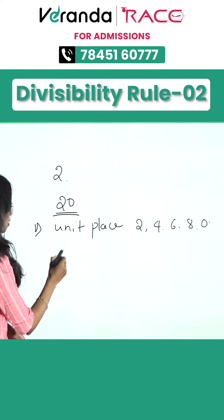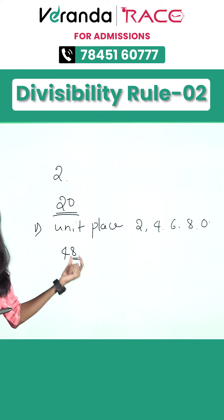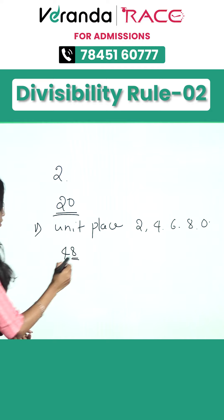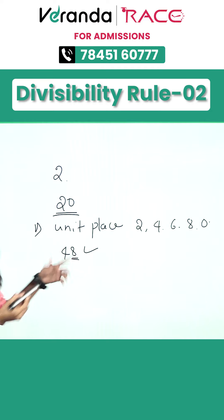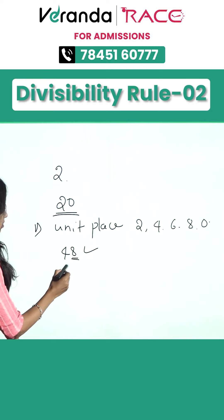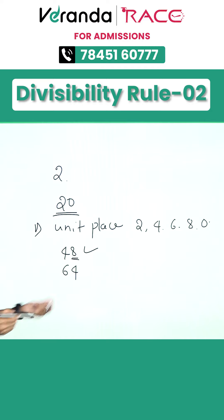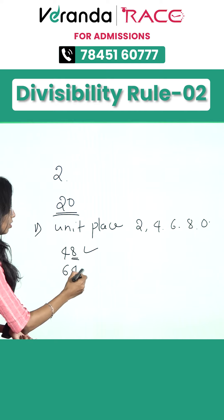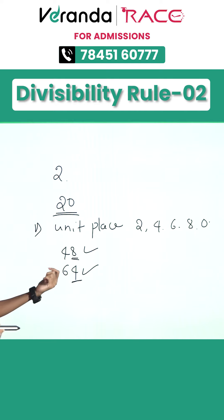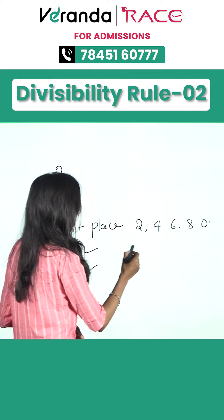For example, 48 — in the unit place we have an even number, so 48 is divisible by 2. And then 64 — here also, in the unit place we are having even number 4, so 64 is divisible by 2.